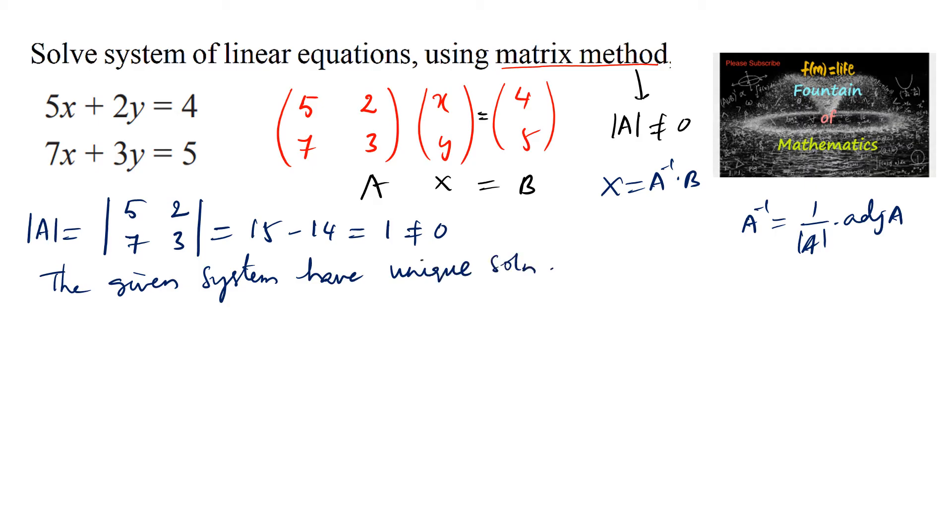Let's find the adjoint of A. Adjoint of A equals the matrix A with the diagonal elements interchanged, so 5 and 3 are interchanged as 3 and 5. The non-diagonal elements 2 and 7 will be changed with a negative sign, that is minus 2 and minus 7. This is adjoint of A.